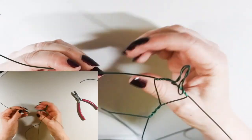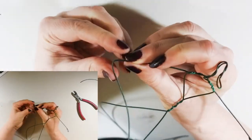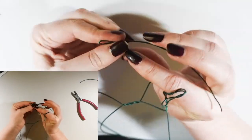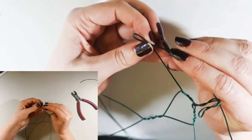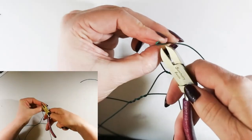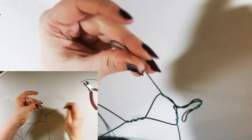And I'm going to eyeball another arm. Could measure them. It would probably make sense to measure them, but I'm just going to eyeball them. And again, bend in a wee hand. Snip as close to the wire as you can so there's not too much excess.